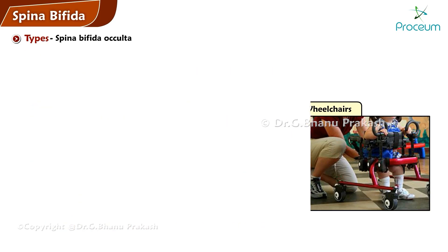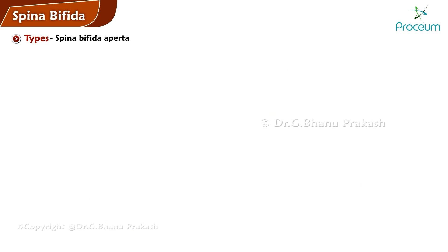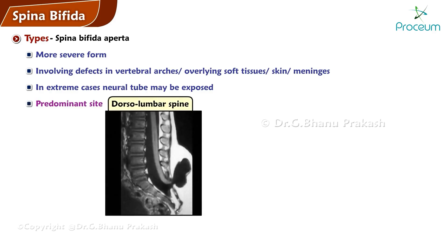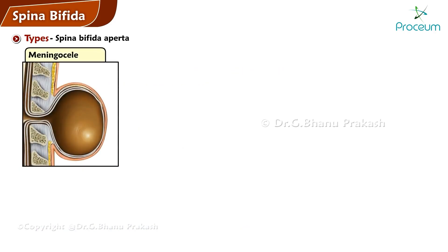Spina bifida aperta is a more severe form involving defects in the vertebral arches, overlying soft tissues, skin, and often the meninges. In extreme cases, the neural tube itself may be exposed. The dorsal lumbar spine is commonly affected. Depending on the extent of the neural tube closure defect, it can be classified into subtypes. Meningocele refers to the protrusion of meninges through a neural arch defect, containing only cerebrospinal fluid.